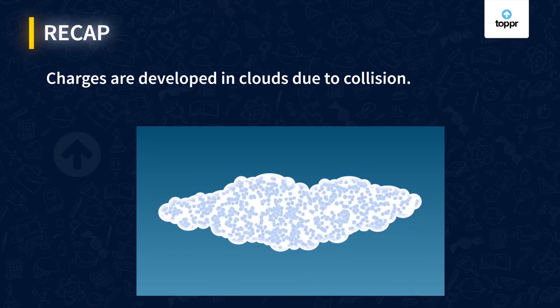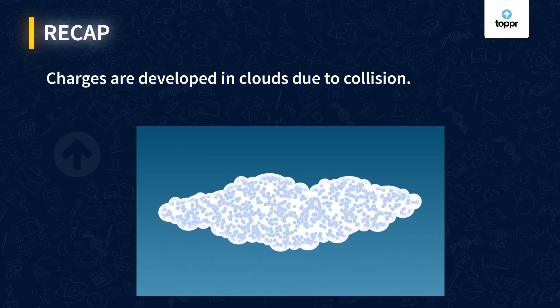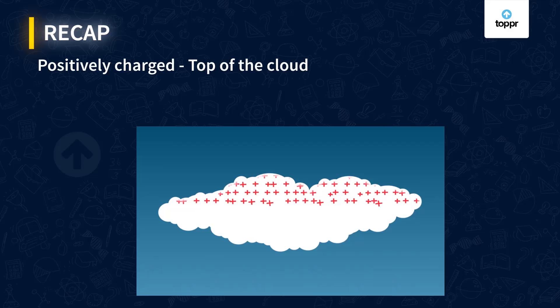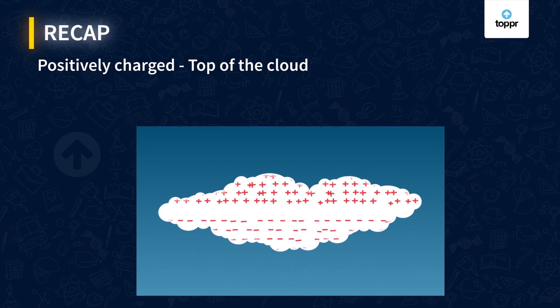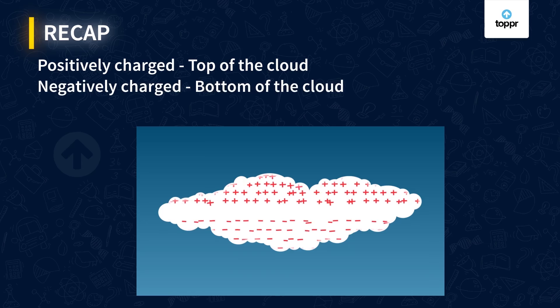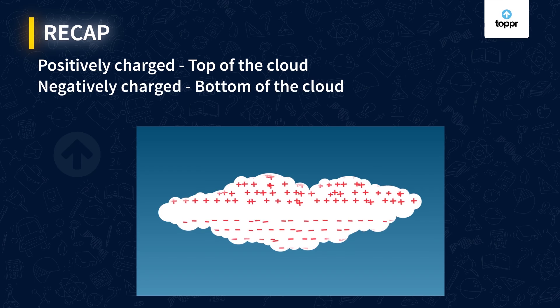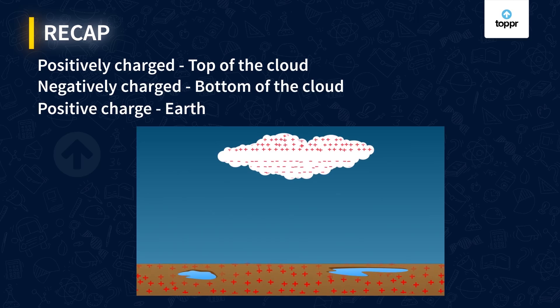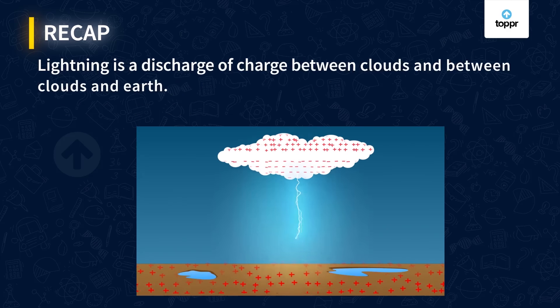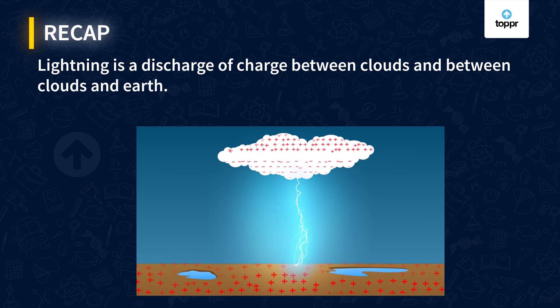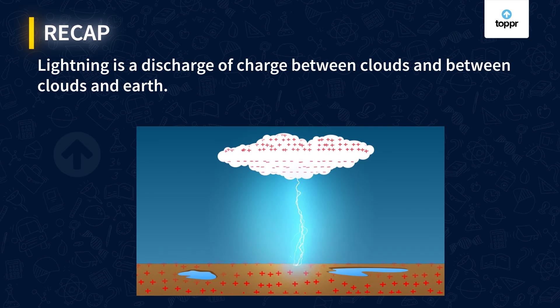We will learn more about how to protect ourselves from lightning in other sessions. Now let's recap how lightning occurs: clouds develop charges due to the collision of particles inside them; lighter positively charged particles form at the top of the cloud; heavier negatively charged particles sink to the bottom of the cloud; this induces a positive charge on the earth; lightning is a sudden discharge that happens to neutralize the charge difference between clouds and between the clouds and the earth. That is all for now. I'll see you soon.